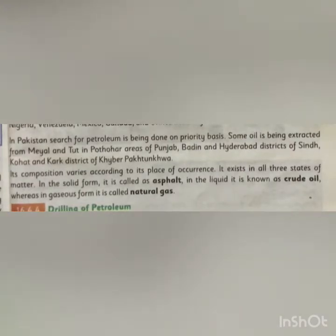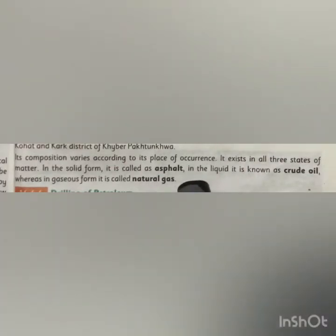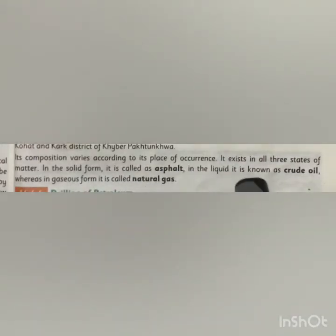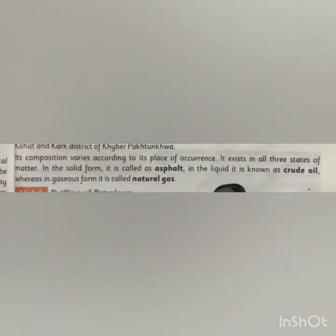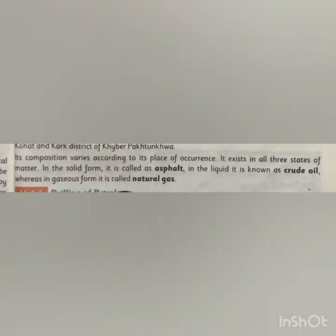The composition of petroleum varies according to its place of occurrence. It exists in all three states of matter: in solid form it is called asphalt, in liquid form it is known as crude oil, and in gaseous form it is called natural gas.